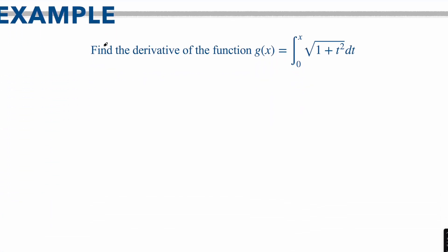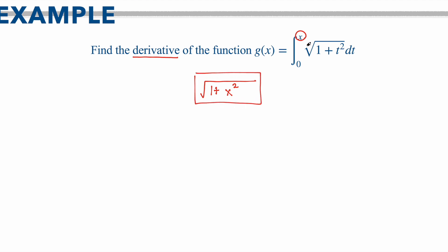For an example, if we want to find the derivative of this function, what we're going to do is technically take the integral of this function and then take the derivative of that integral, and it's going to end up being the function with respect to x. So our answer is going to be 1 plus, instead of it being t squared, it is going to be x squared. Think of this as: when you take the derivative of an integral, they basically cancel each other out, and the fact that you originally put in the value of x is why your answer is in terms of x.